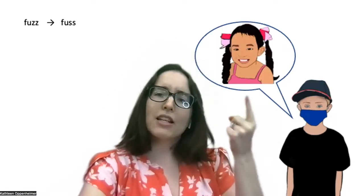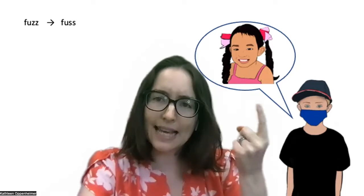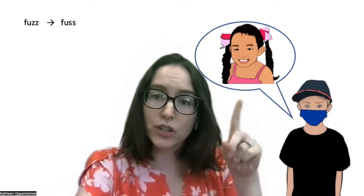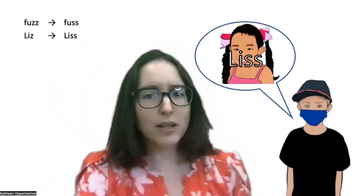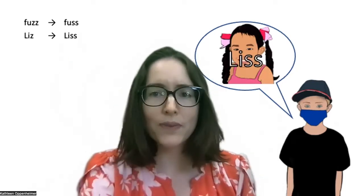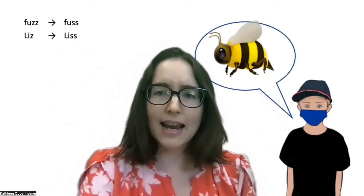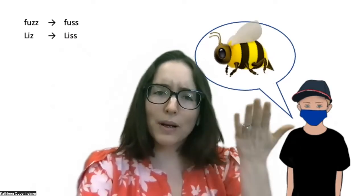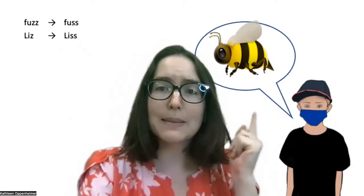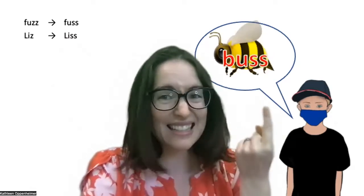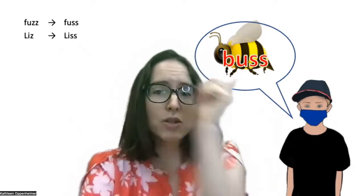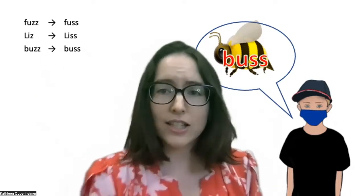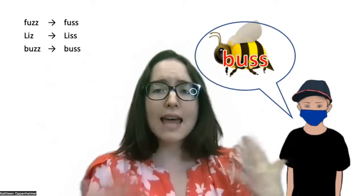Then I'm going to ask him about his friend Liz, but he calls her Liz. So let's add that to our list. And then I ask him about the sound a bee makes, and he says "bus" — he doesn't say "buzz," he says "bus." So let's add that to our list too.